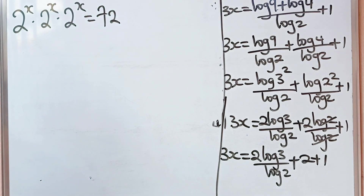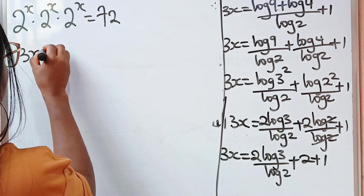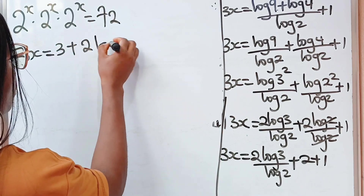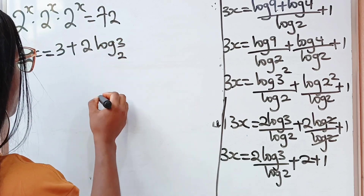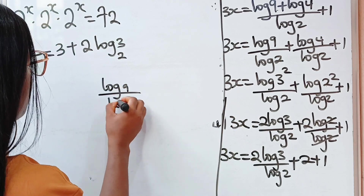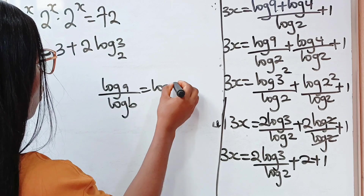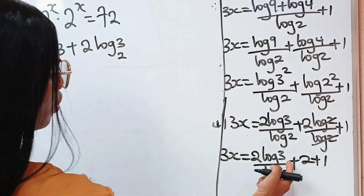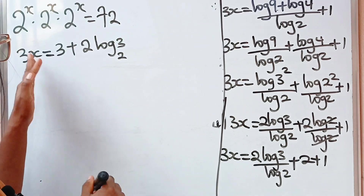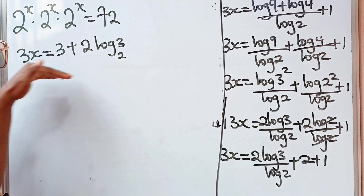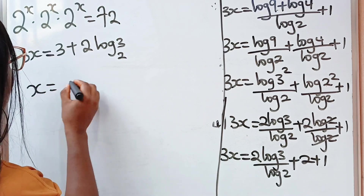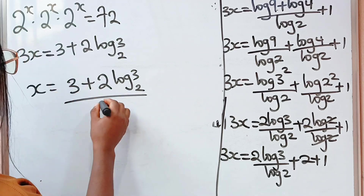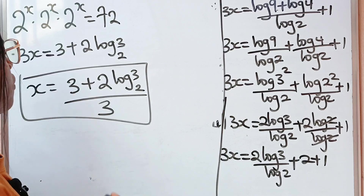So what we now have is 3x is equal to 2 plus 1, which gives us 3, plus 2 log 3 base 2. Because when you have log A divided by log B, this is equal to log A base B. So we can write this as log 3 base 2. Remember that we are looking for the value of x and not 3x, so we divide both sides by 3. Thus x is equal to 3 plus 2 multiplied by log 3 base 2, everything divided by 3. So this is the value of x.